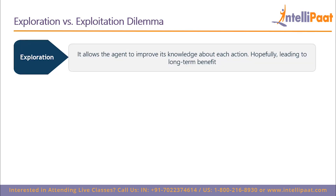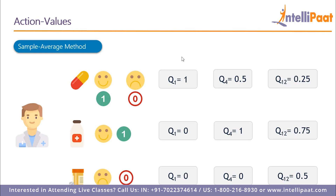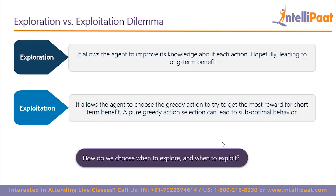Exploration allows an agent to improve its knowledge about each action for long-term benefit, while exploitation allows the agent to choose the greedy action for short-term reward. One issue with exploitation is it can lead to sub-optimal behavior. In our clinical trials example, if we exploit after the very first trial, we keep choosing medicine one because it has the highest estimated value — but after 12 trials with more exploration, we find the second action actually returns the highest reward.